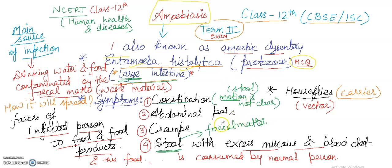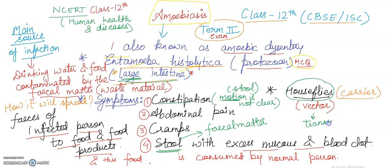The housefly is the vector — not the causative agent — for this disease. The causative agent is Entamoeba histolytica. The housefly is only the carrier or vector, meaning it is the transmitter that transmits the disease.